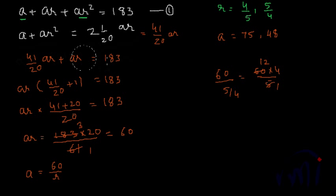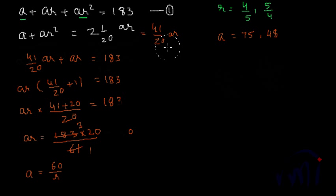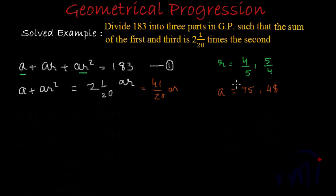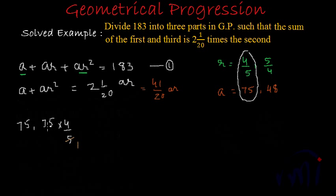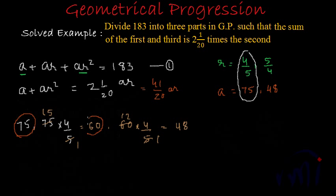Now we find the three terms. For the first case, where a = 75 and r = 4/5: the first term is 75, the second term is ar = 75 × (4/5) = 60, and the third term is ar² = 60 × (4/5) = 48. So the three terms are 75, 60, and 48.